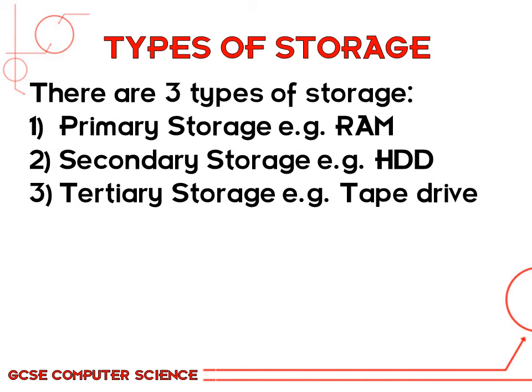There are three different types of storage. We've already covered primary storage, which is where the memory that the CPU accesses quickly and directly — like registers, RAM, ROM, and the cache. This is the fastest type of memory and is usually volatile. You could think of it as short-term memory. So if you think of yourself as a computer, whatever you're working on at that time is in your short-term memory — this would be stored in the RAM.